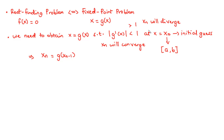If x_n diverges, it will not approach a specific approximated value — it will jump from one value to another. So whenever this condition is not satisfied, we need to find another form of x = g(x) until the condition |g'(x₀)| < 1 is satisfied.